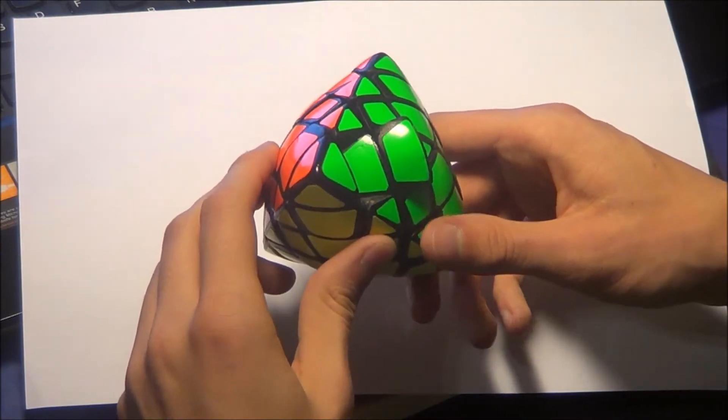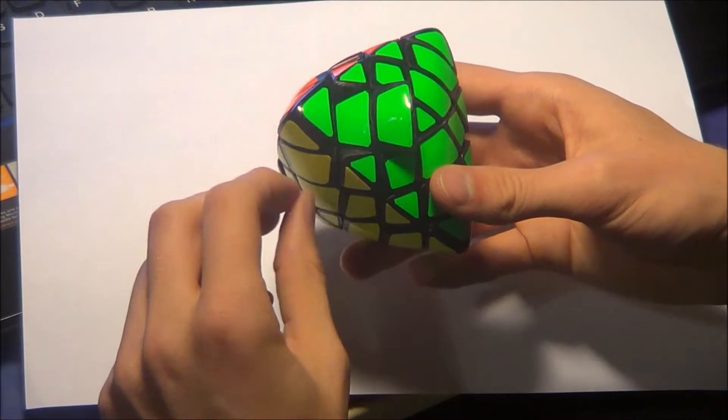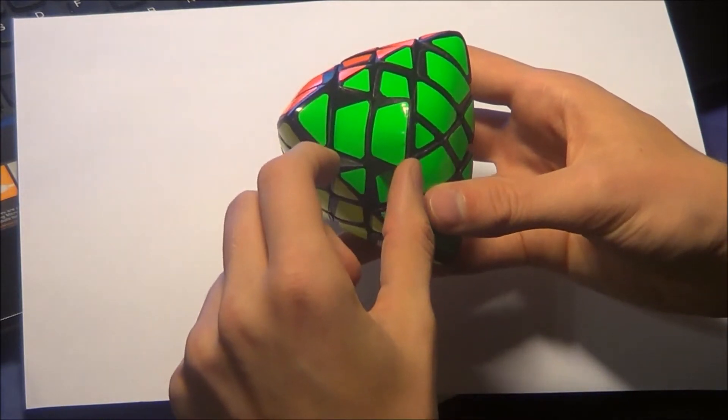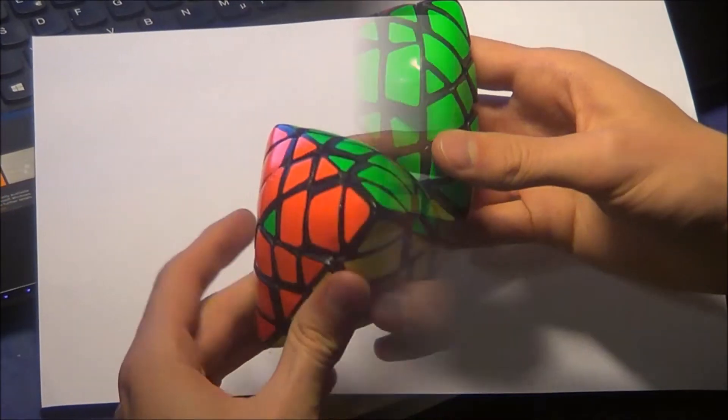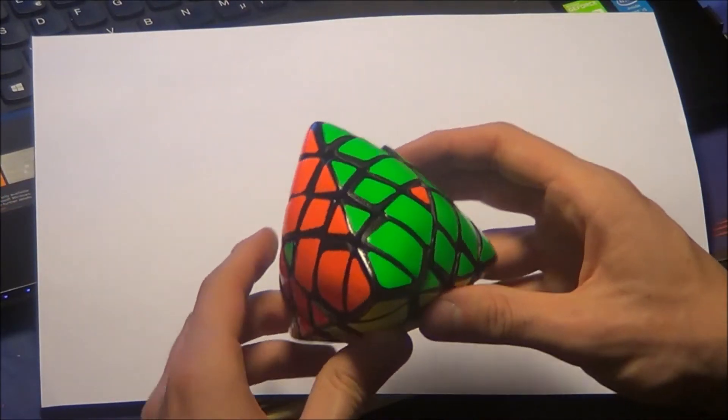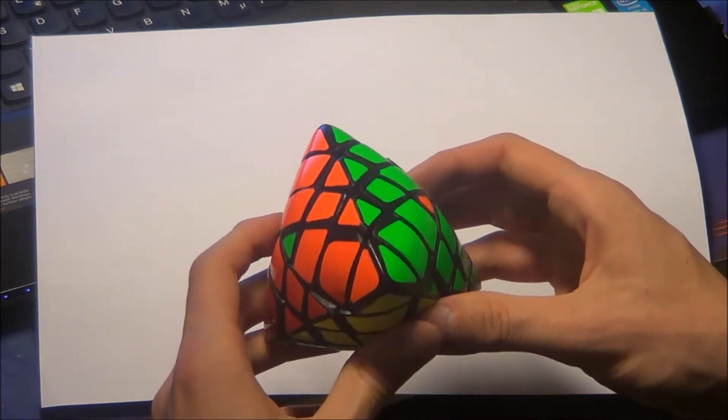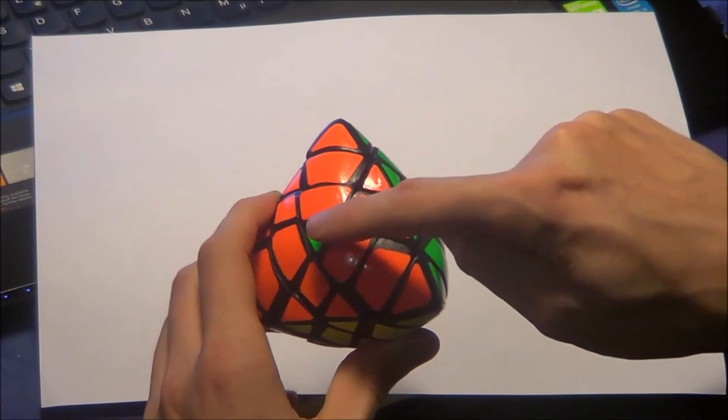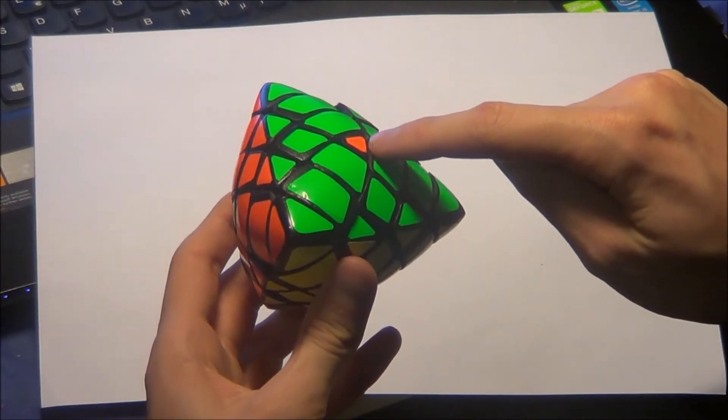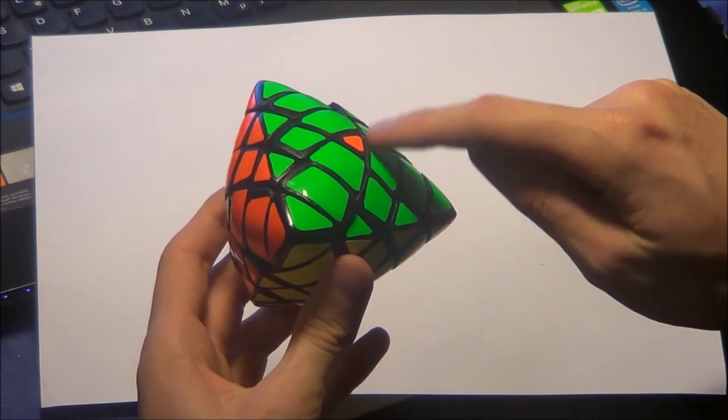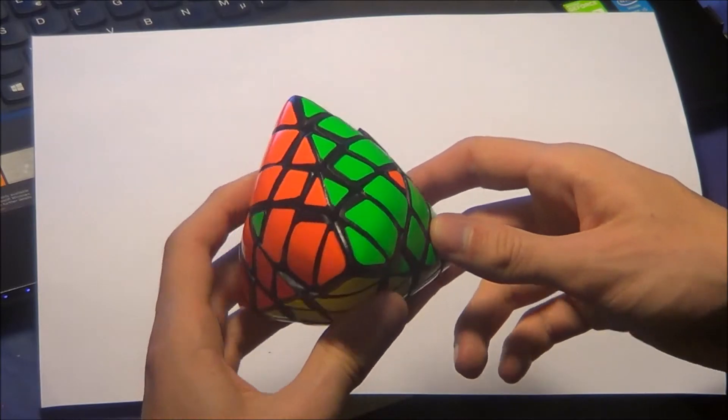Okay, this is the first parity where you have one paired edge that has to be flipped, like on the normal 4x4 puzzle. This is exactly the same parity. Then you also have a parity on this puzzle where you have to flip two opposite corners, which is similar to the parity on 4x4, but you can't use the same algorithm because of the different shaped centers.